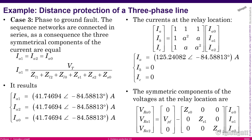We need ABC quantities, so using the classical symmetrical component theory — ABC quantities equal matrix A multiplied by the vector of zero, positive, and negative sequence components — we obtain that the currents in phases B and C are zero. Only phase A carries current: 125.24 amps magnitude. This confirms that this is a single line-to-ground fault, as only phase A current is non-zero.